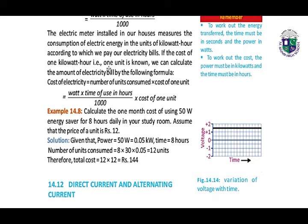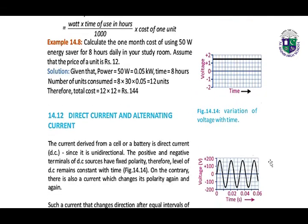If the cost of 1 kilowatt-hour (one unit) is known, we can calculate the amount of the electricity bill using the following formula. For example: power is 50 watts, converting to kilowatts. Time is 8 hours. Number of units consumed: 8 × 30 × 0.05 equals 12 units. Therefore, total cost will be 144 rupees.